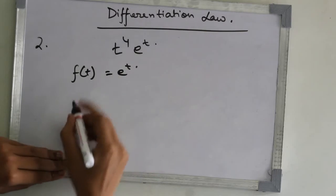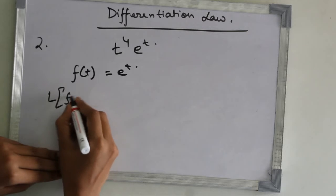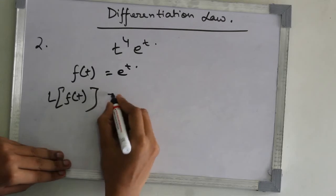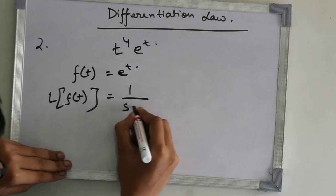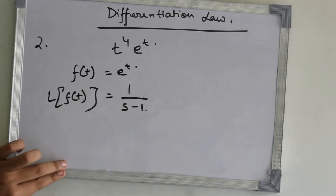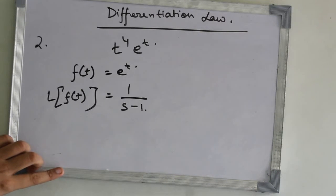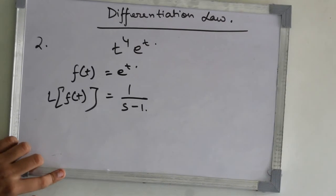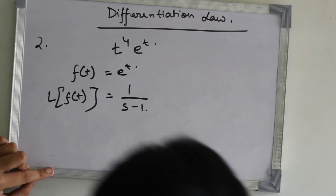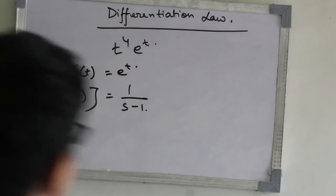The Laplace transform of f of t equals 1 upon s minus 1. We can get this from the formula we have used.